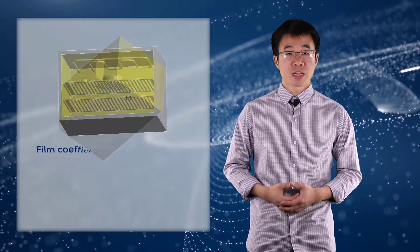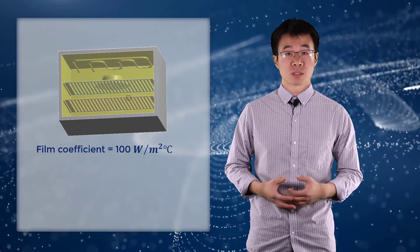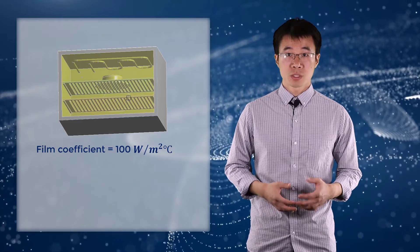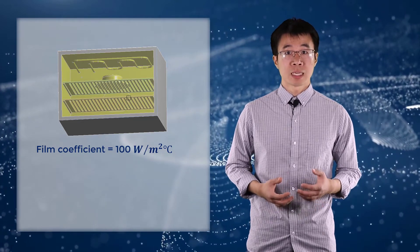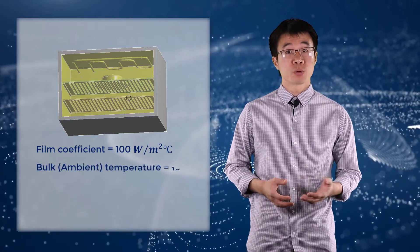Next, let's apply convection on all inner surfaces of the oven, including the inner face of the glass door. And this models the circulation of hot air inside the oven due to the fan. The bulk temperature is assumed to be 180 degrees Celsius.